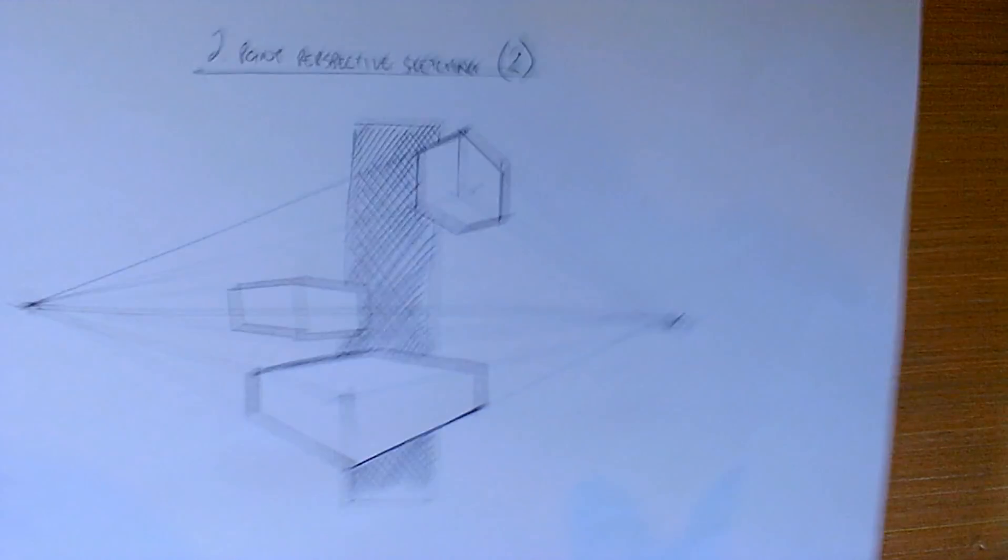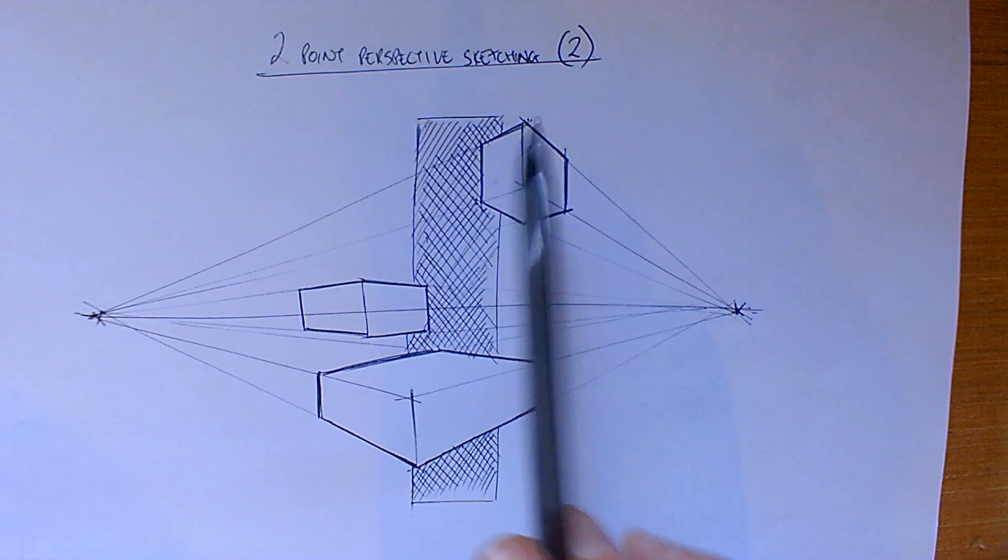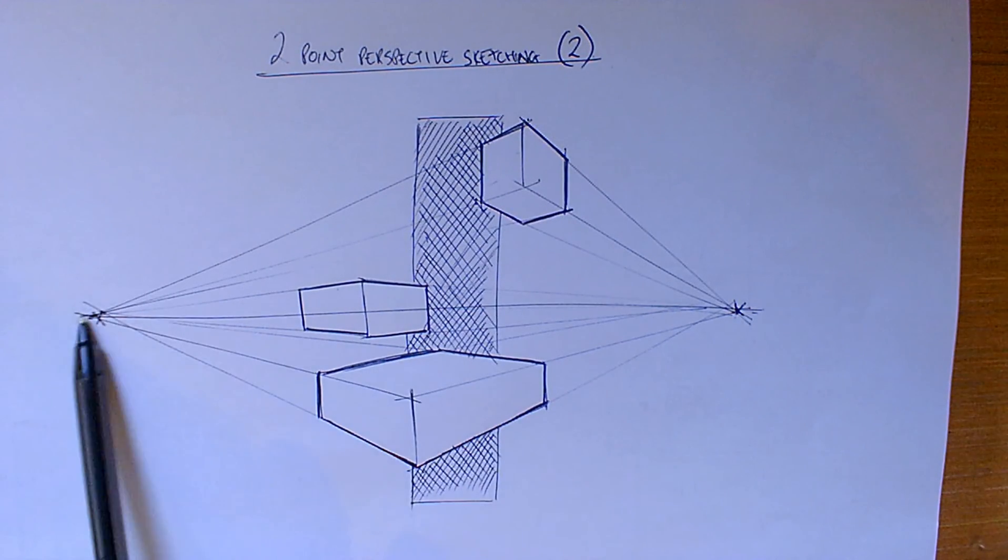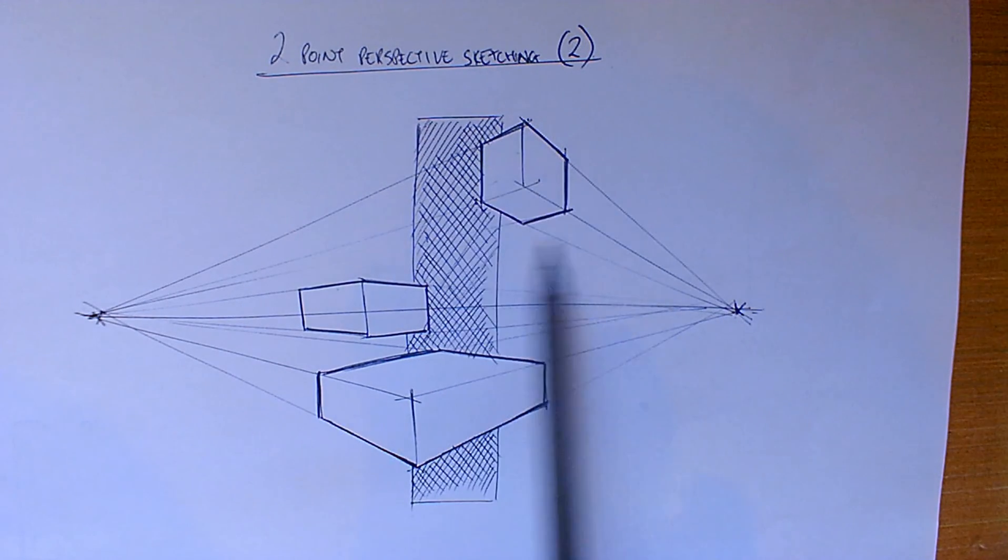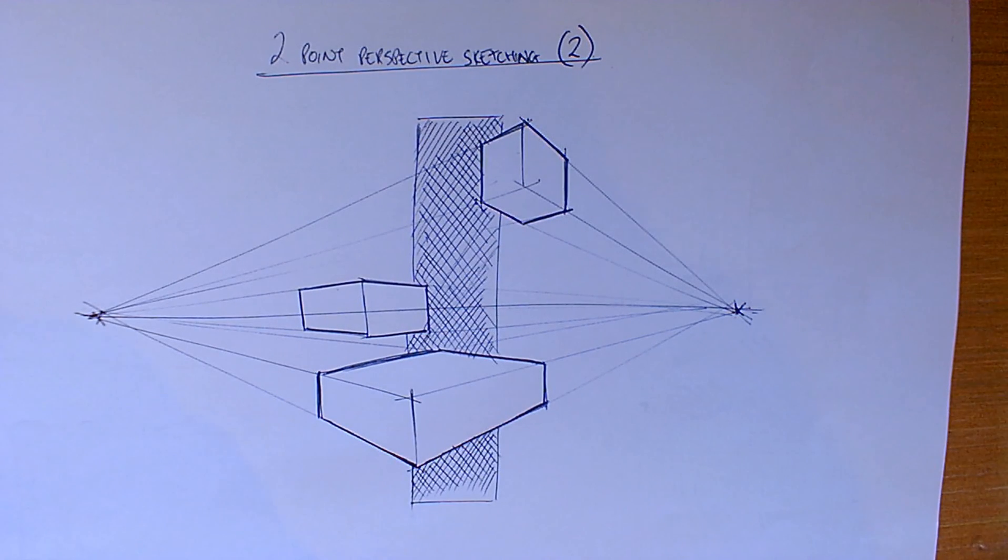In summary, what we've done there is our two-point perspective sketching activity where we've drawn above the horizon line, below the horizon line, and on it as well. Added our thick and thin lines and then our landing box behind to show all of those shapes are linked. Good luck.